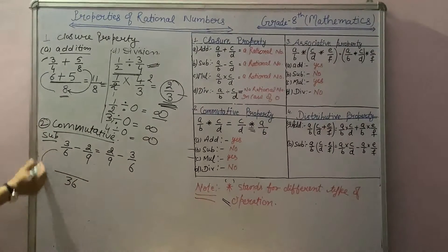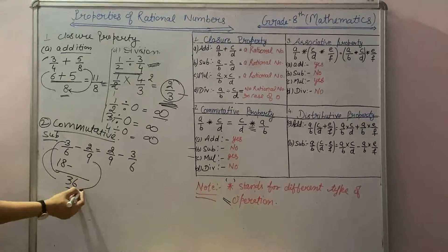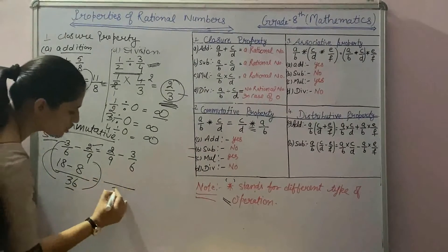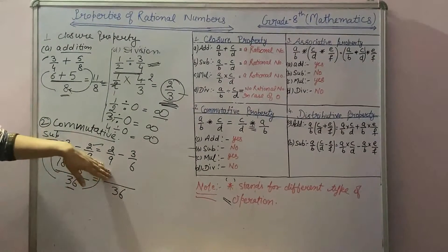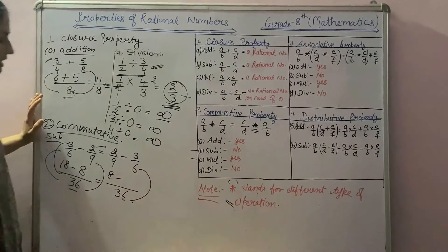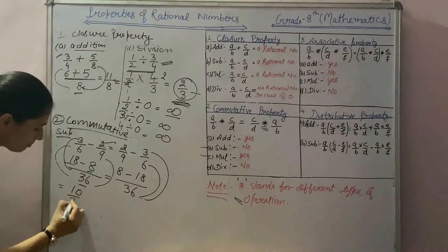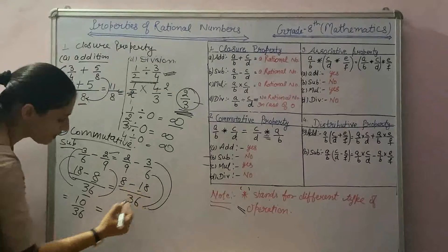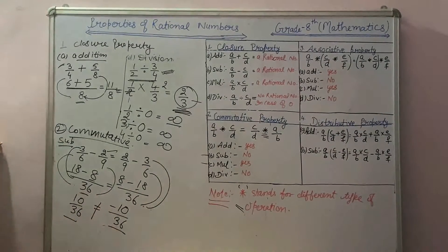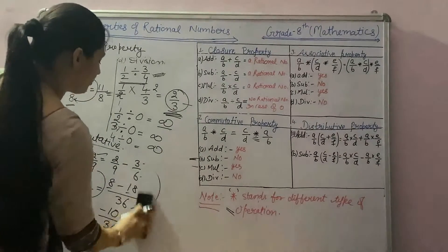On the left-hand side: divide 36 by 6, we get 6, and 6 multiplied with 3 gives 18. Then 36 divided by 9 gives 4, and 4 multiplied by 2 gives 8. So we get 18 minus 8, which is 10 by 36. On the right-hand side: 36 divided by 9 gives 4, and 4 multiplied with 2 gives 8. Then 36 divided by 6 gives 6, and 6 multiplied by 3 gives 18. So we get 8 minus 18, which is minus 10 by 36. Right-hand side is not equal to left-hand side. That means commutative property does not hold for subtraction.